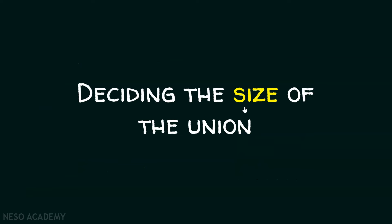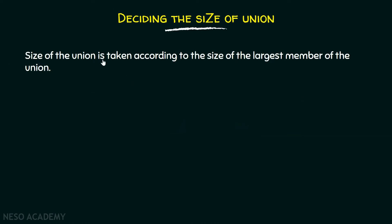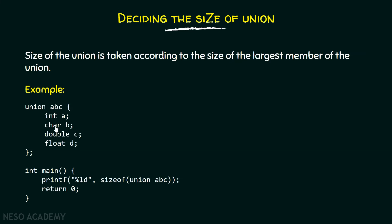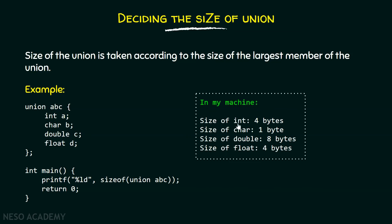Now, how to decide the size of the union? The size of the union is taken according to the size of the largest member of the union. For example, we have union ABC which consists of four members: integer a, character b, double c, and float d. In my machine: size of integer is 4 bytes, size of character is 1 byte, size of double is 8 bytes, and size of float is 4 bytes.